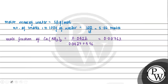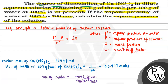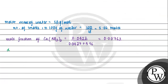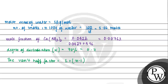Now we consider the degree of dissociation. According to the question, the degree of dissociation is 70%, which converts to 0.7. We calculate the Van't Hoff factor using the formula i = 1 + (n − 1)α. Substituting: 1 + (3 − 1) × 0.7, giving an i value of 2.4.